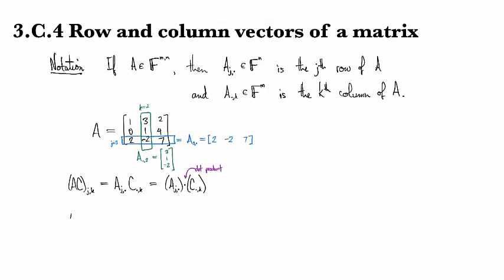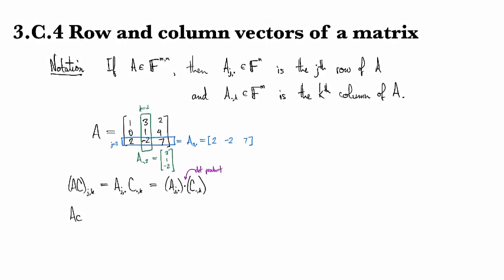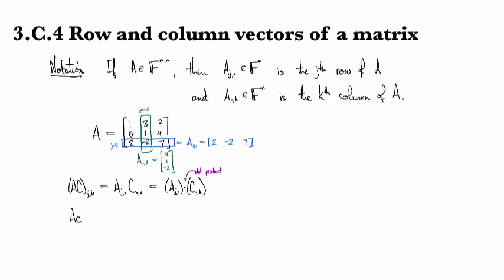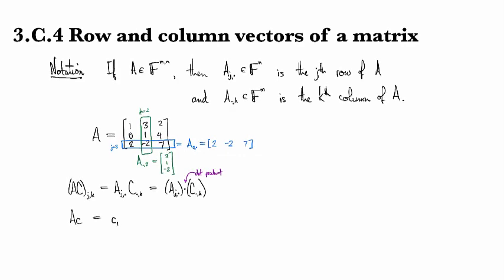The other thing that I want to emphasize, and this is important, is that if you look at the product of a matrix times a vector, so let's take c to be our vector here, then this is a linear combination of the columns of A with coefficients given by c.